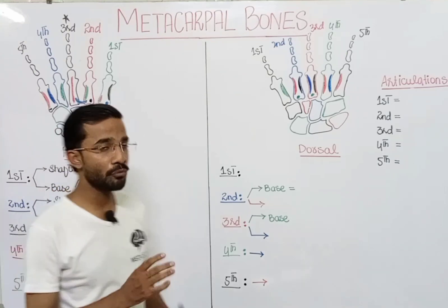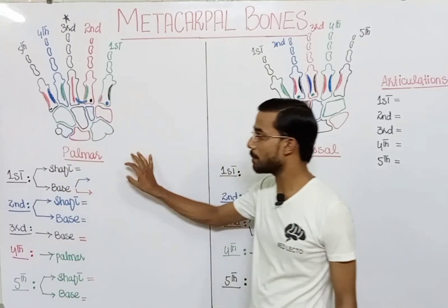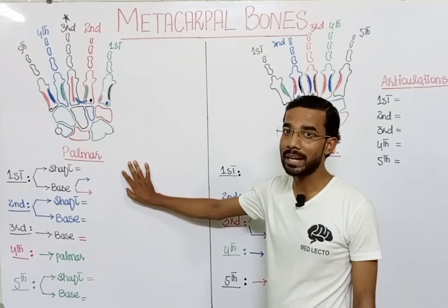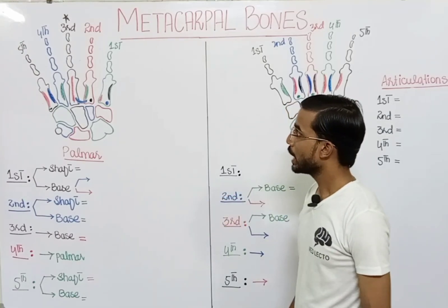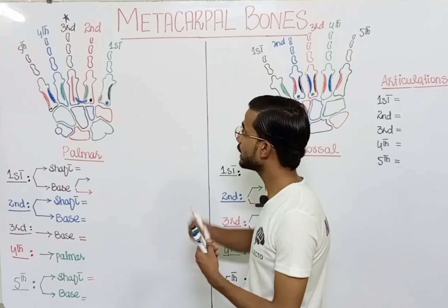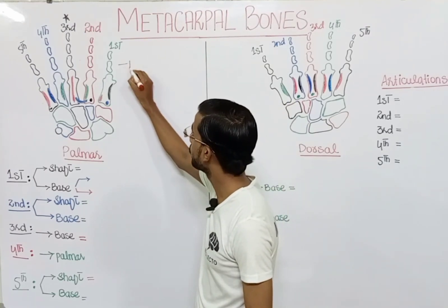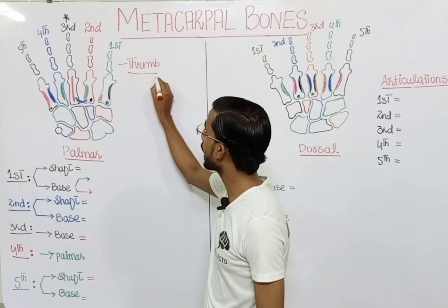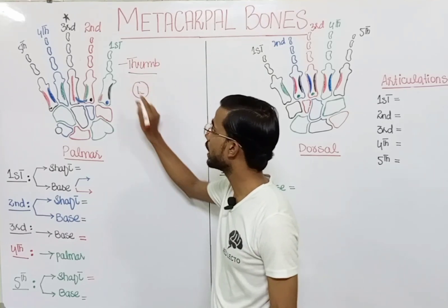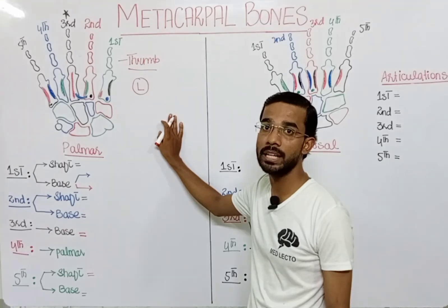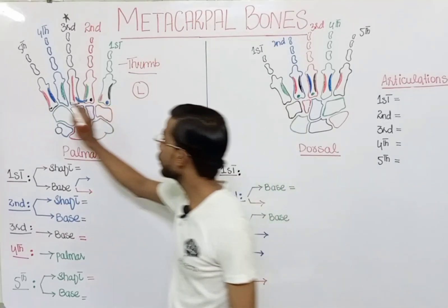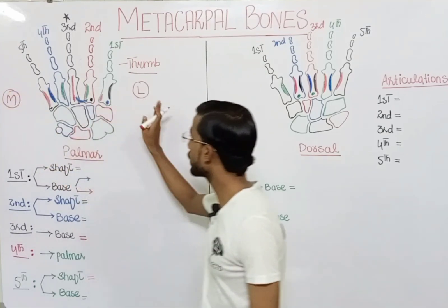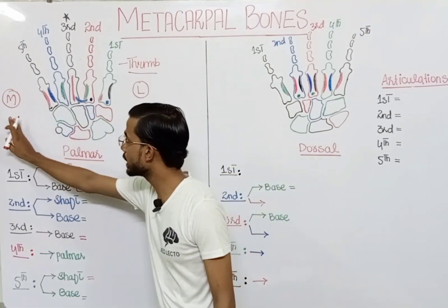First we will discuss the palmar side, or the anterior side, of the metacarpal. At the thumb side, just keep in mind that the thumb side is actually the lateral side and the opposite will be the medial side.